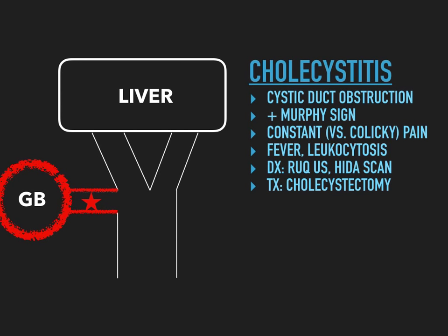If you can't do an ultrasound, you do a HIDA scan. Basically, you're seeing whether the gallbladder can take up a special kind of dye. If it can, things are okay; but if it can't, it's because the cystic duct is obstructed. Treatment here is cholecystectomy — this is more serious than cholelithiasis. Unlike cholelithiasis where you can do an elective cholecystectomy, here you have to take it out because it's inflamed and you don't want to infarct any area of the biliary tree.